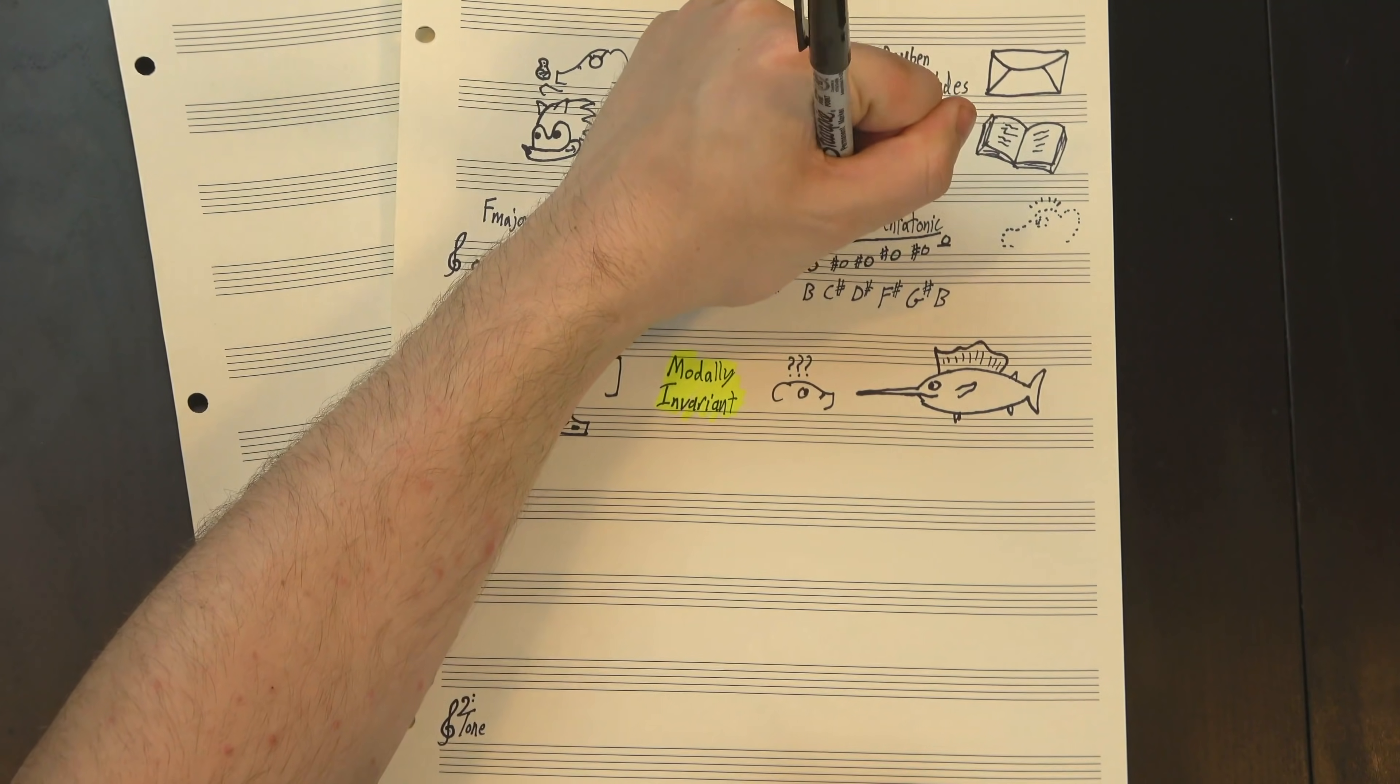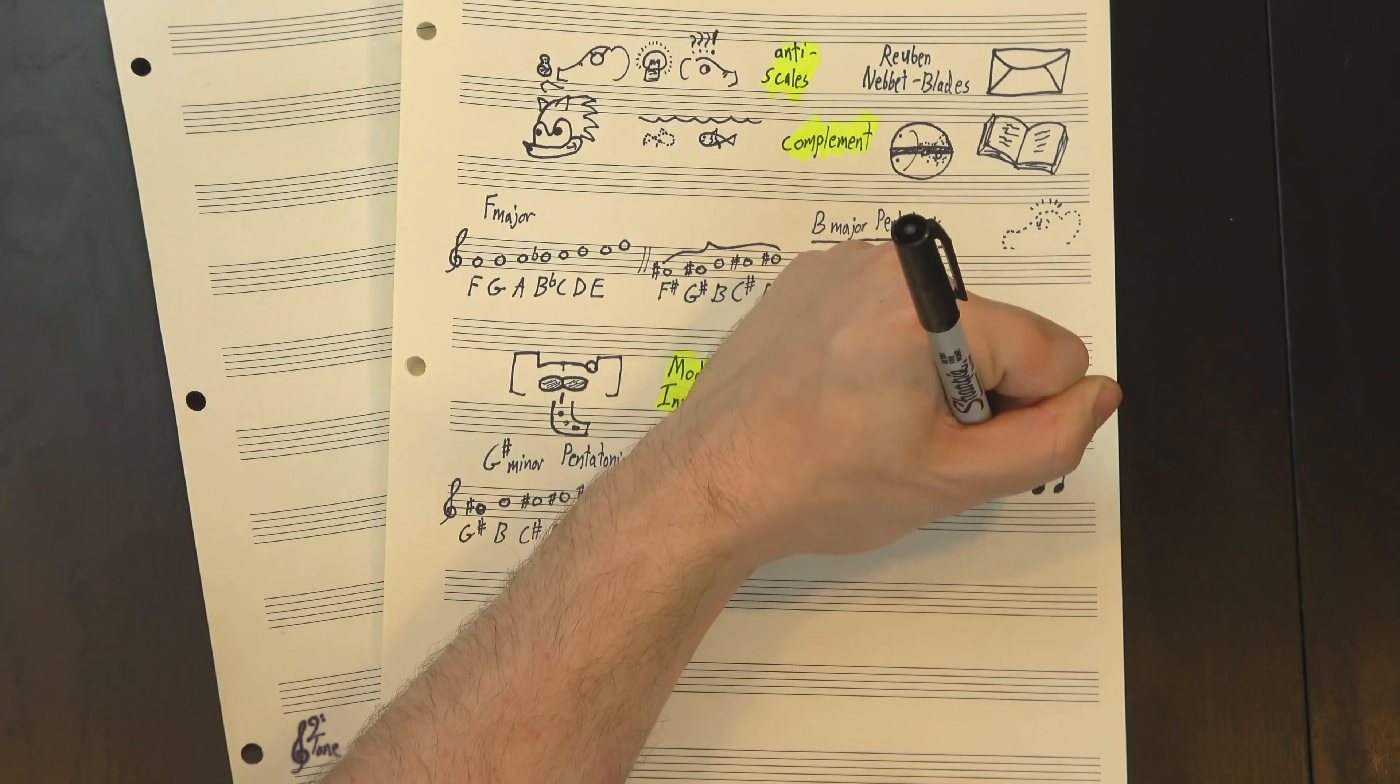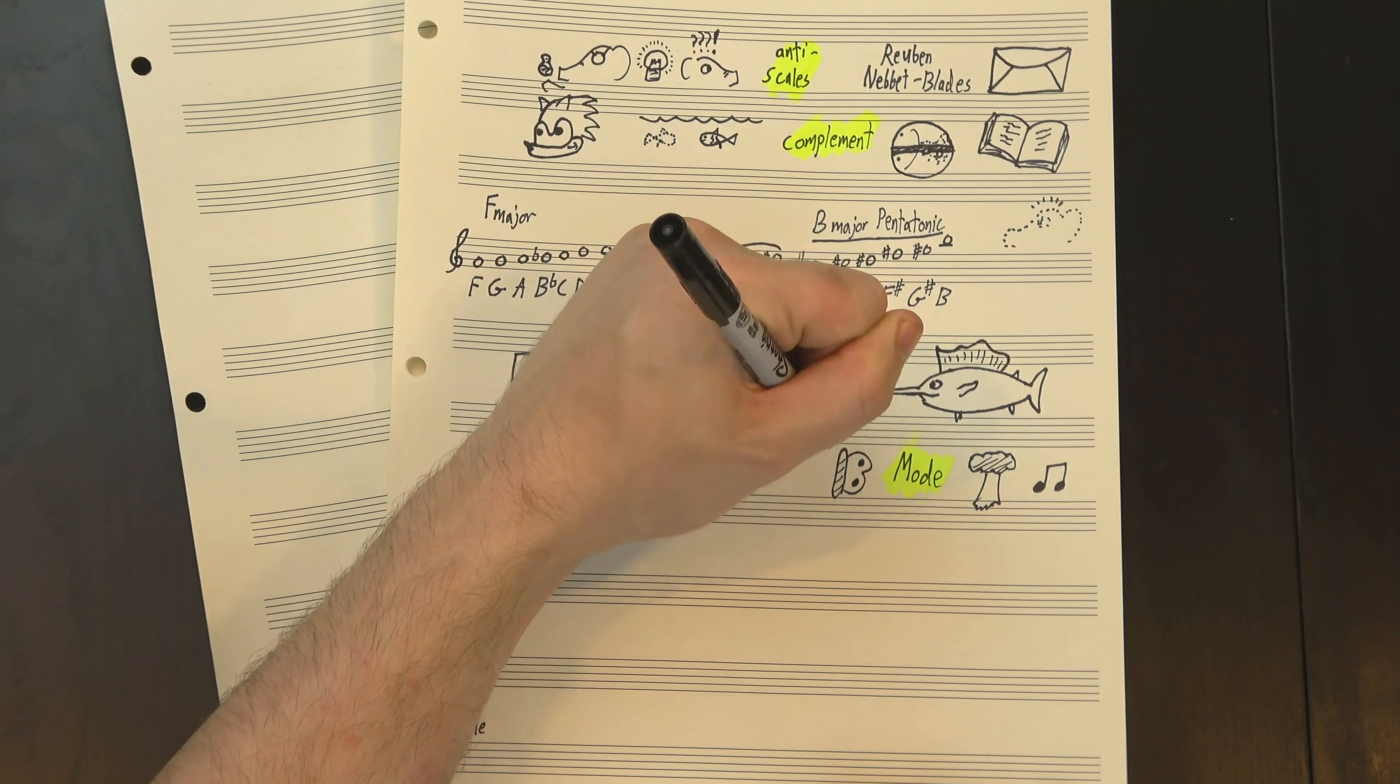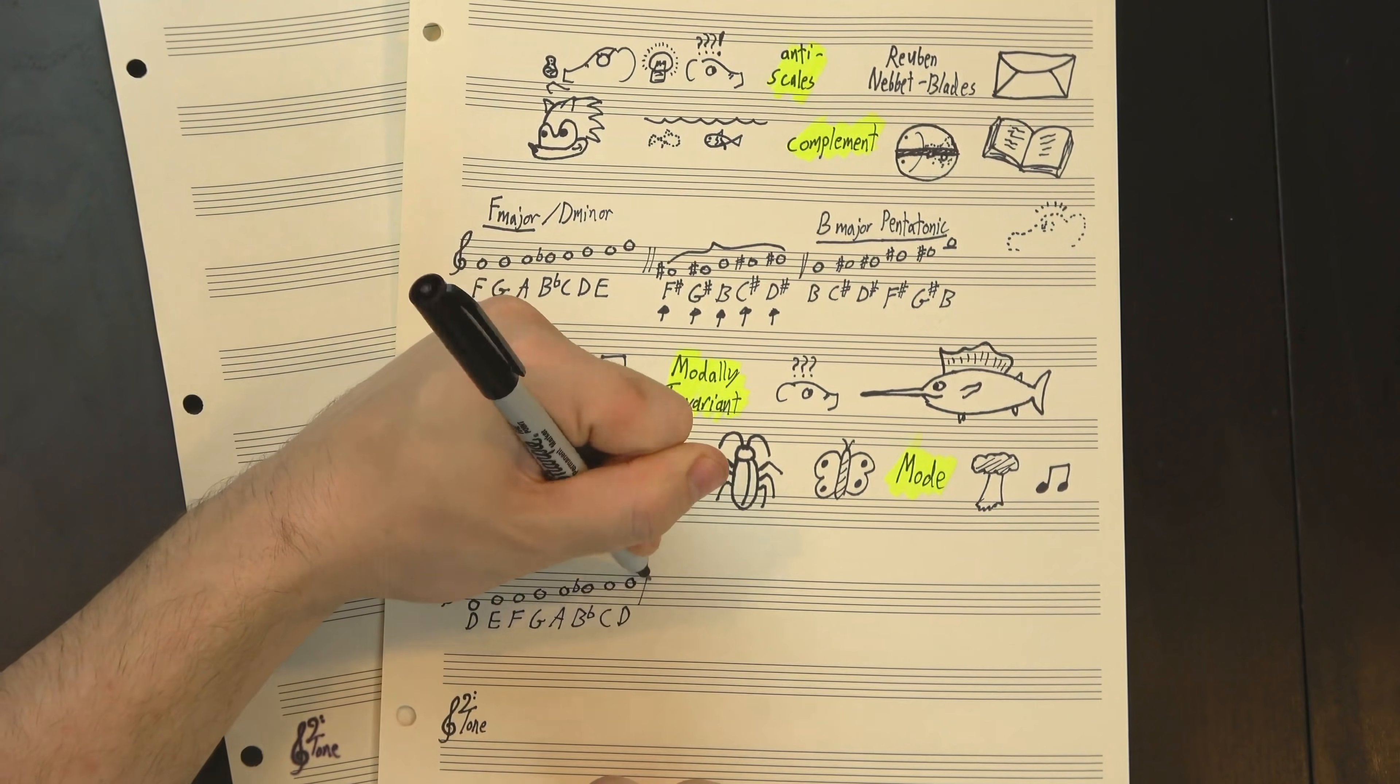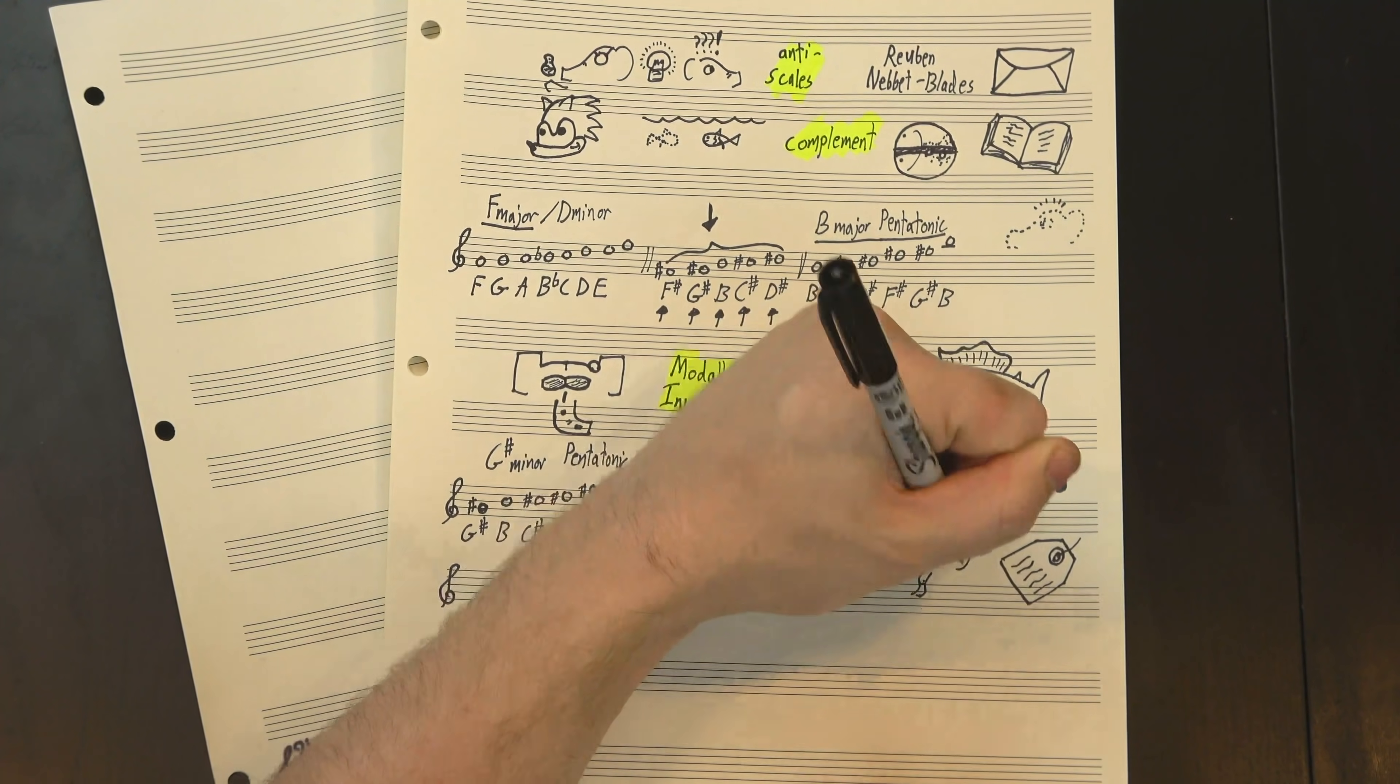We said this was B-major pentatonic, but we could've just as easily arranged the notes like this and got G-sharp minor pentatonic instead. Playing the same notes but using a different root gives you what's called a mode, and since any of these five notes could be the root, all five modes of the scale are totally valid complements of F-major. And it gets even worse, cuz major has modes too. We called this F-major, but if we called it D-minor instead, it would've had the same notes and thus the same complement.